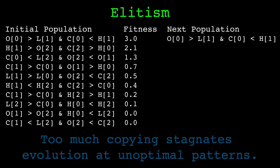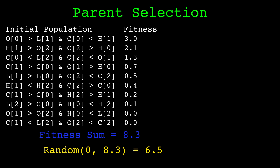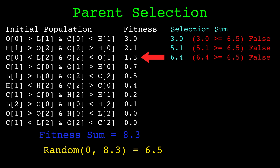Now for parent selection. We select two patterns to serve as parents — they reproduce and create two children patterns. To select parents, we first sum all the fitness values in the population. We generate a random value between zero and the pool sum, then loop through each pattern and add the pattern's fitness to a running selection sum. The first pattern where the selection sum is greater than or equal to our random value is selected as a parent. This method makes patterns with higher fitness more likely to be selected. If a pattern has a fitness of zero, it will have a 0% chance of reproducing — survival of the fittest. We repeat this process again to select a second parent.